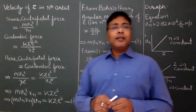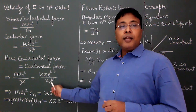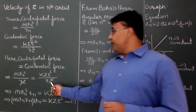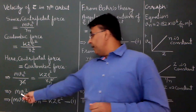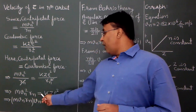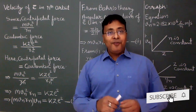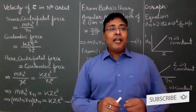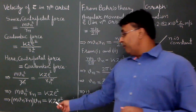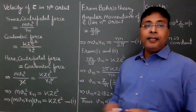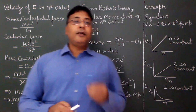From the mathematics: cancel one rn from both sides, then multiply both sides by rn, giving m·vn²·rn = kze². We can write vn² as vn × vn, so this becomes m·vn·rn × vn = kze². This is Equation 1.